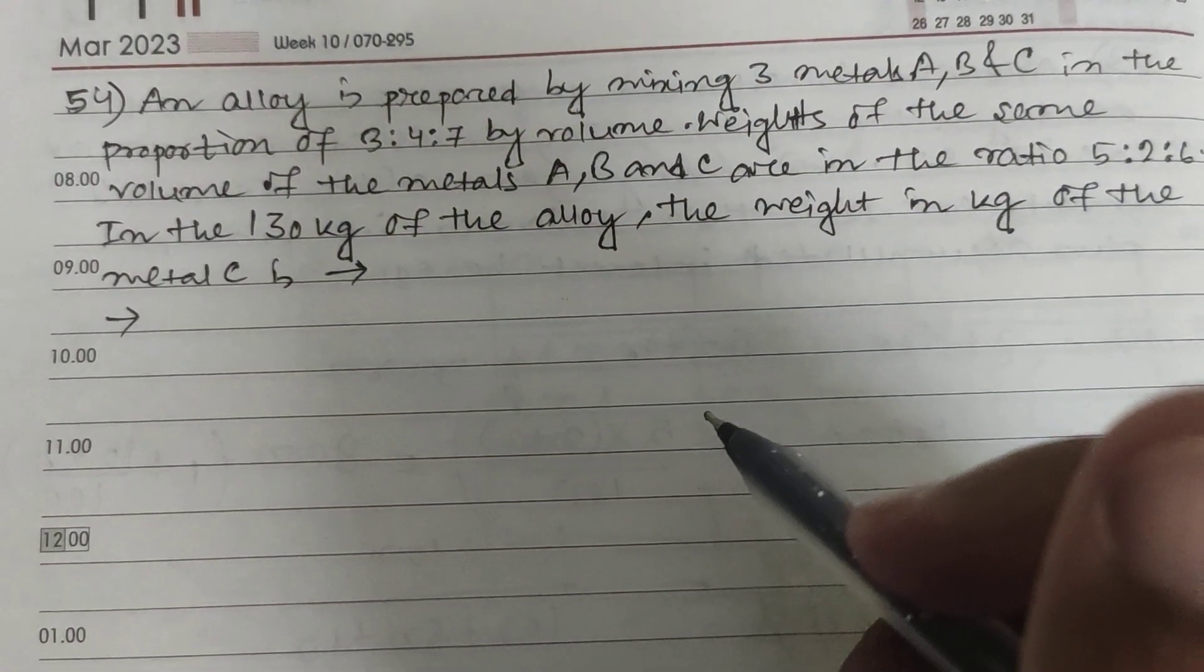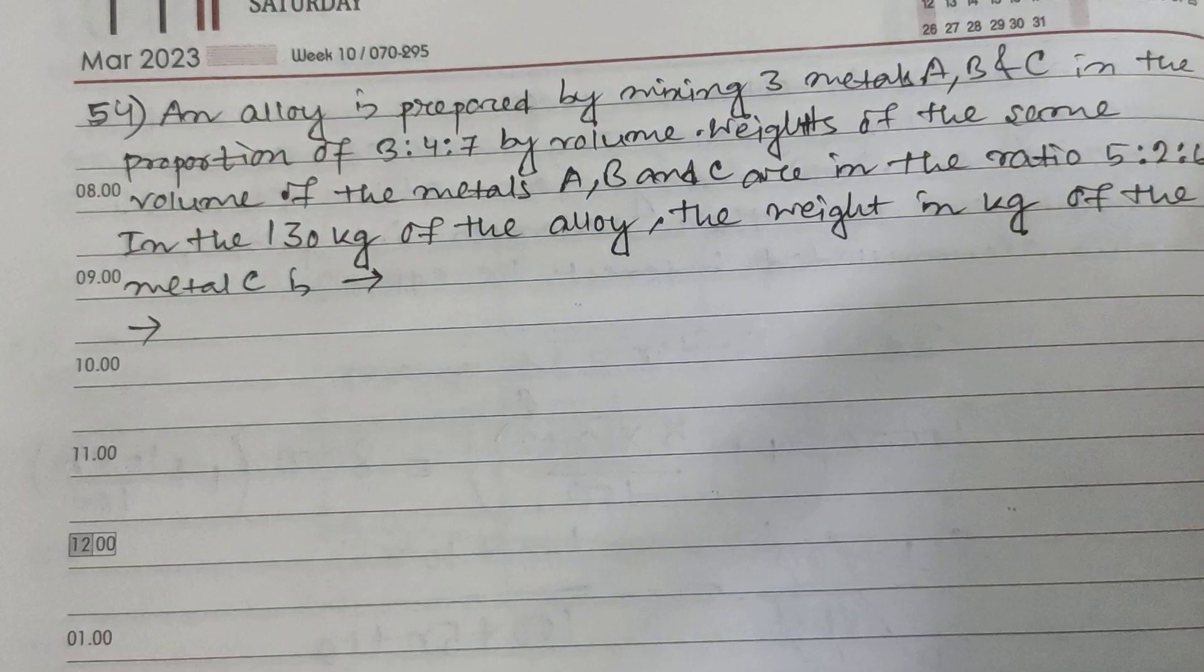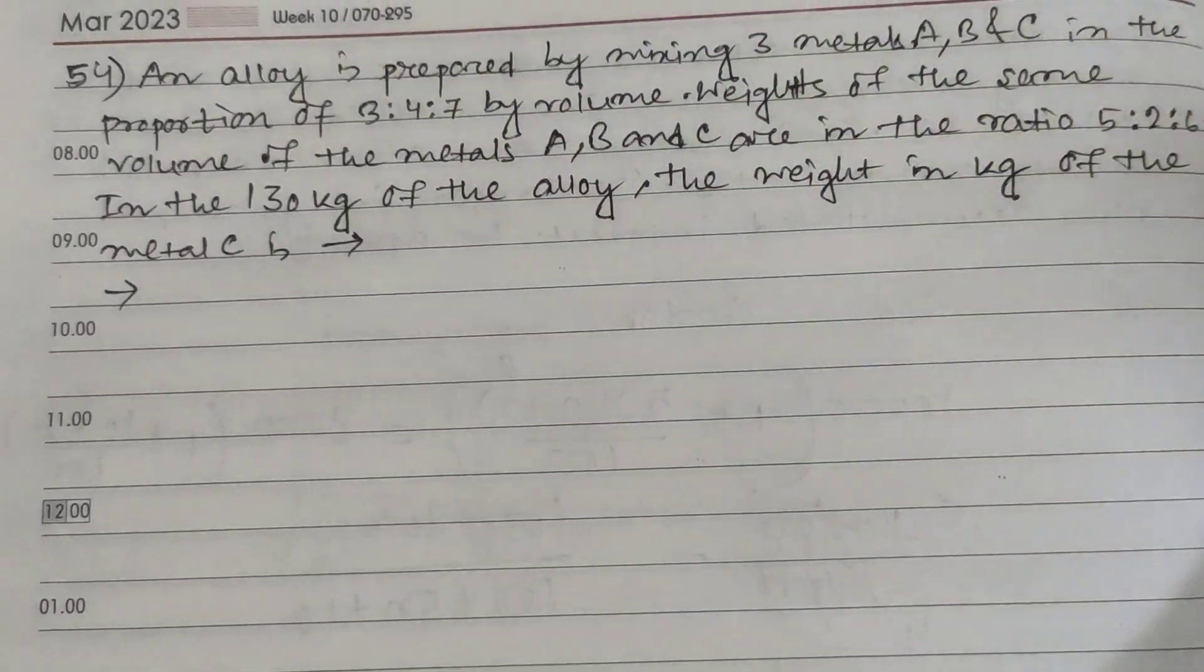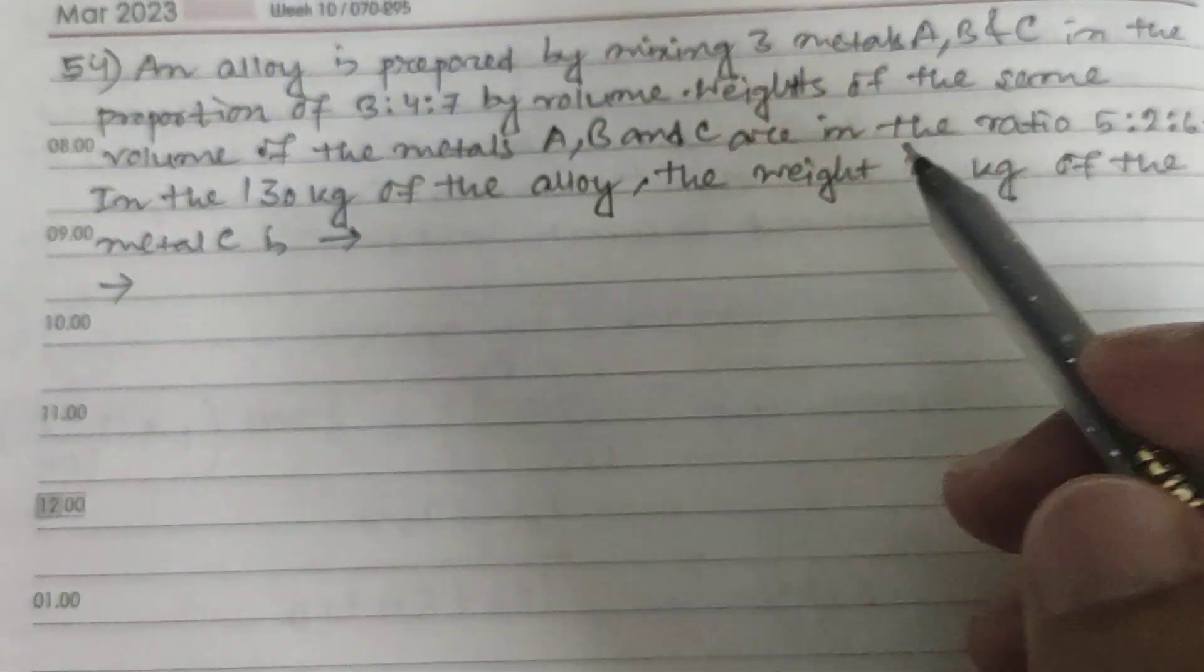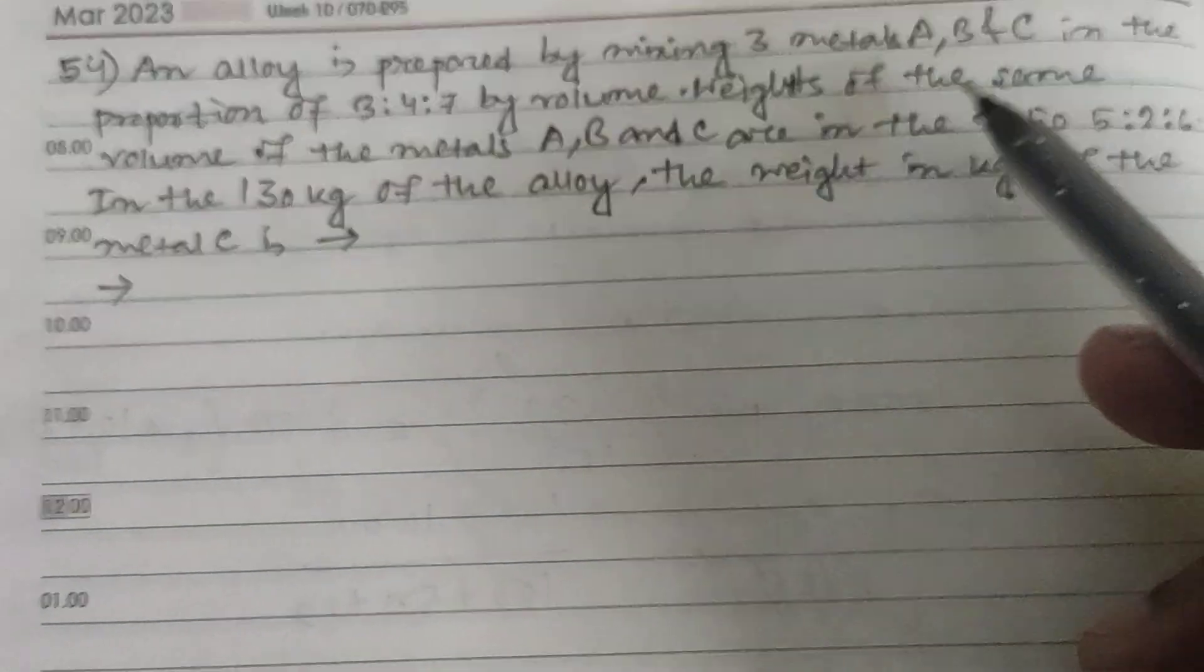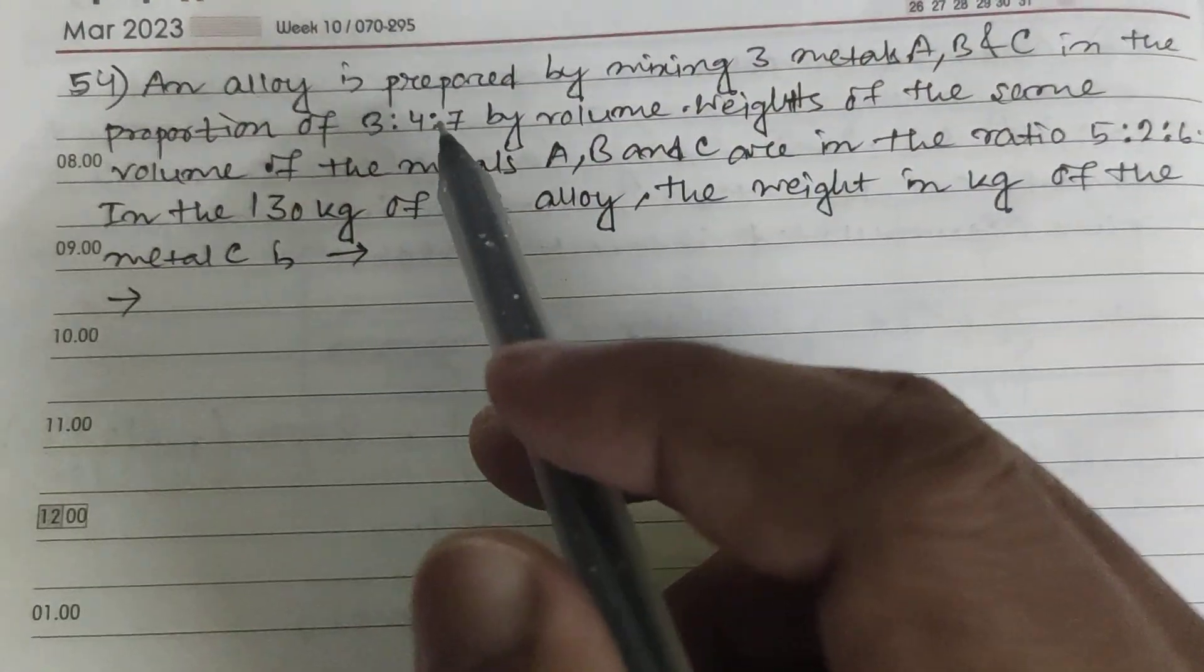This is question number 54, very important for your bank or CAT examinations. The question is: an alloy is prepared by mixing three metals A, B, and C in the proportion of 3:4:7 by volume.